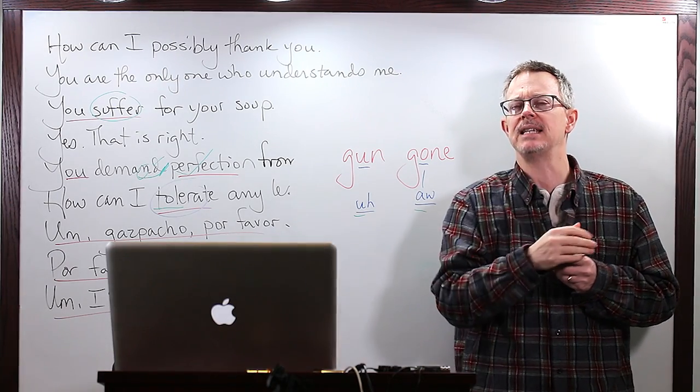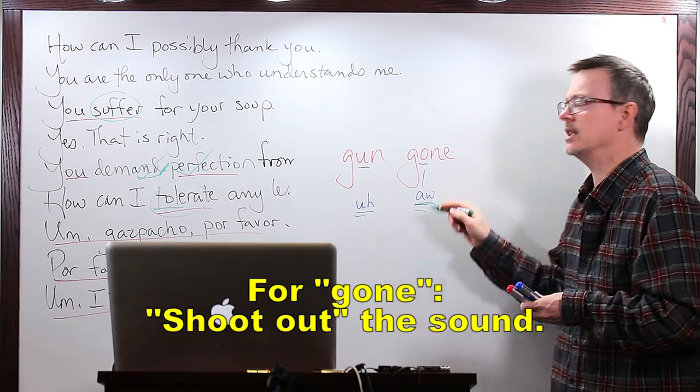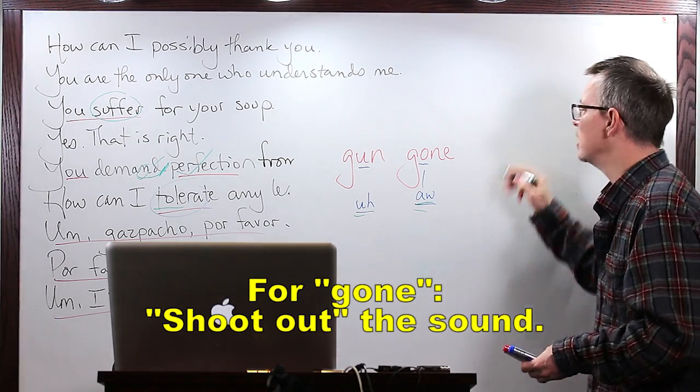Gone, gone. We shoot out kind of straight, maybe a little bit down. Gone. The key thing for the aw is the tongue placement.